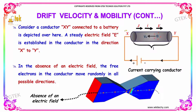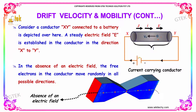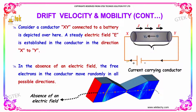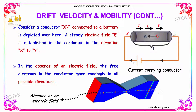Consider a conductor X and Y, which is connected to a battery, as depicted here. A steady electric field E is established in the conductor in the direction from X to Y.